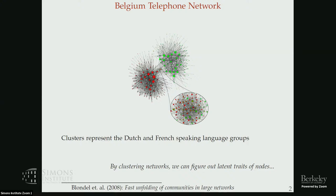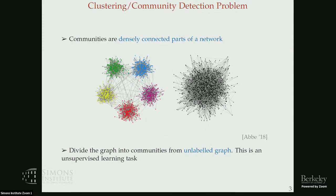If we can do clustering on a network, we can figure out hidden traits of the nodes present in the network — like which language they speak. In general, communities are densely connected parts of the network. Usually we are given an unlabeled observation, we don't know which nodes belong to which community, and from that we have to reconstruct the communities.